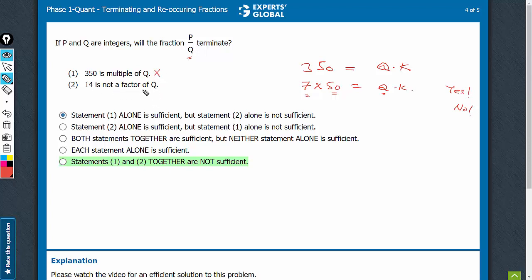Statement 2 alone gives very little information. 14 is not a factor but 3 could be a factor, 11 could be a factor. So statement 2 alone is, of course, not sufficient.